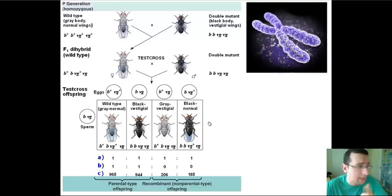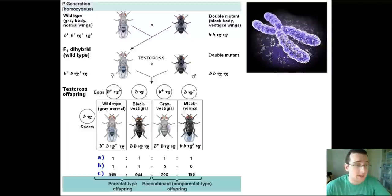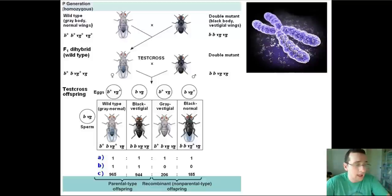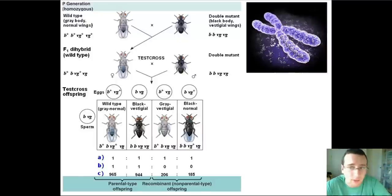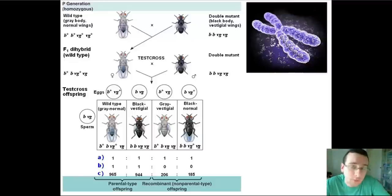Wild type is the original type and mutant types are the changed types. Morgan discovered the pattern of linkage by looking at a particular cross — a fly that was wild type for body color and wings, crossed with a mutant for both traits: black body and vestigial wings, which made the flies fly funny. As any P-cross does, you get a heterozygous form. That heterozygous fly is crossed again with the double mutant, making it a test cross, because you're crossing someone heterozygous for traits with someone who's pure for traits.